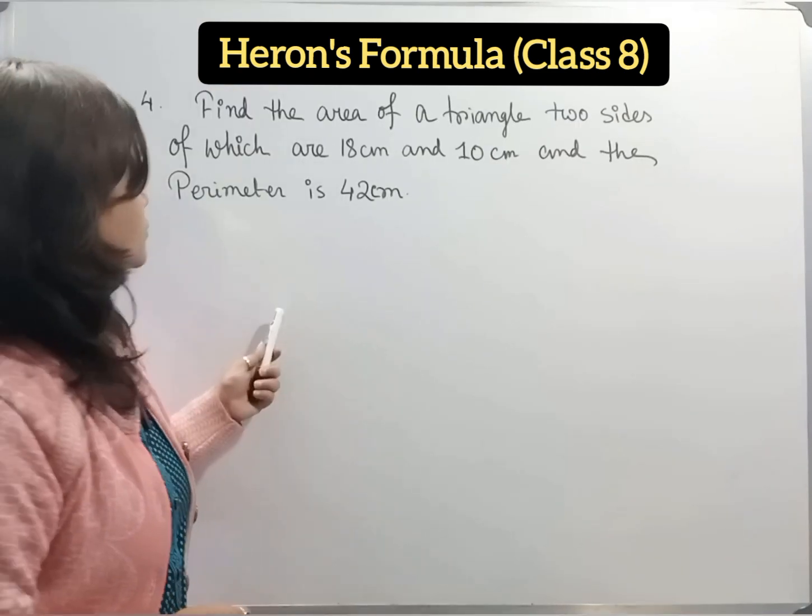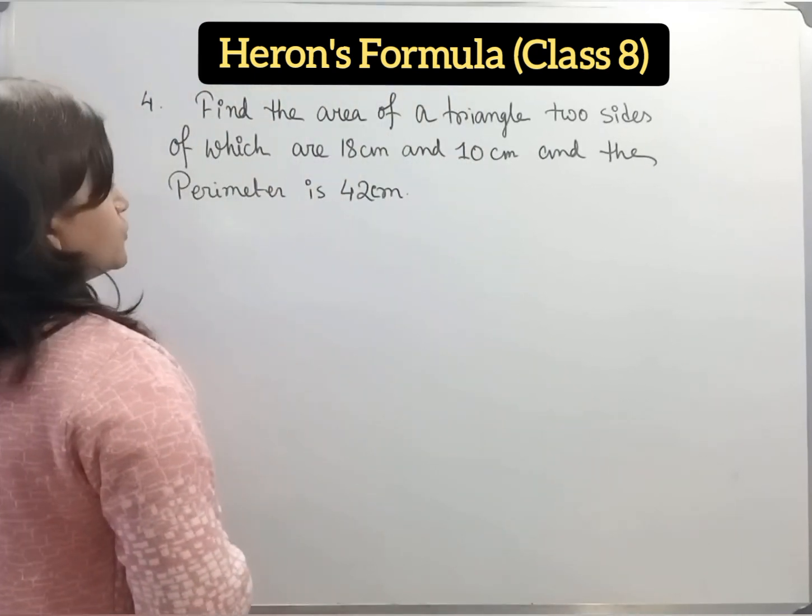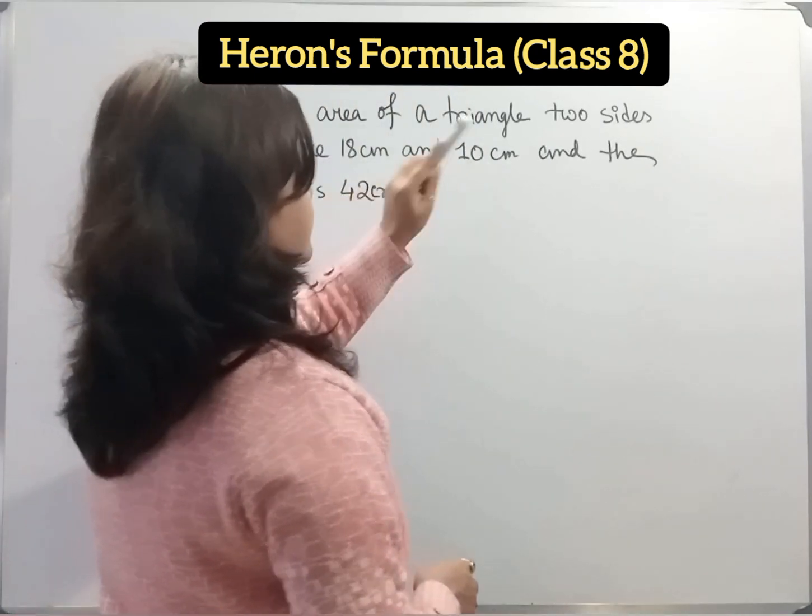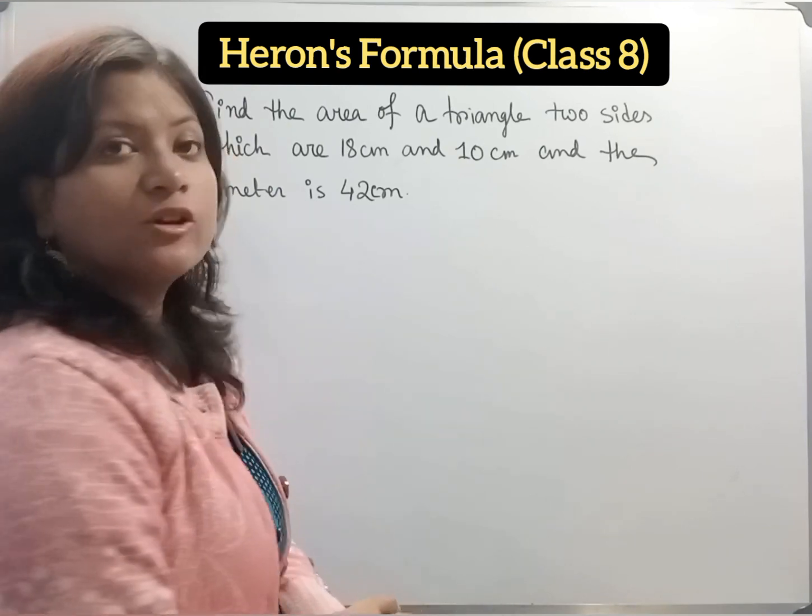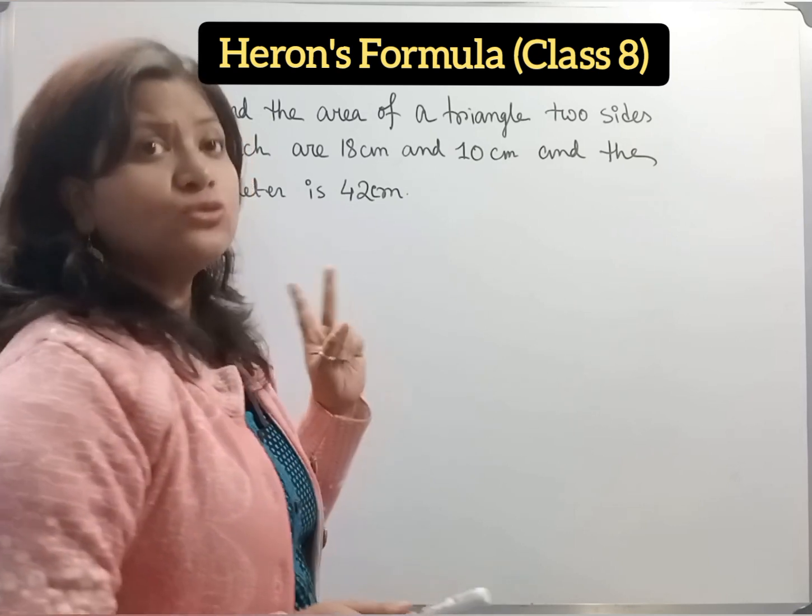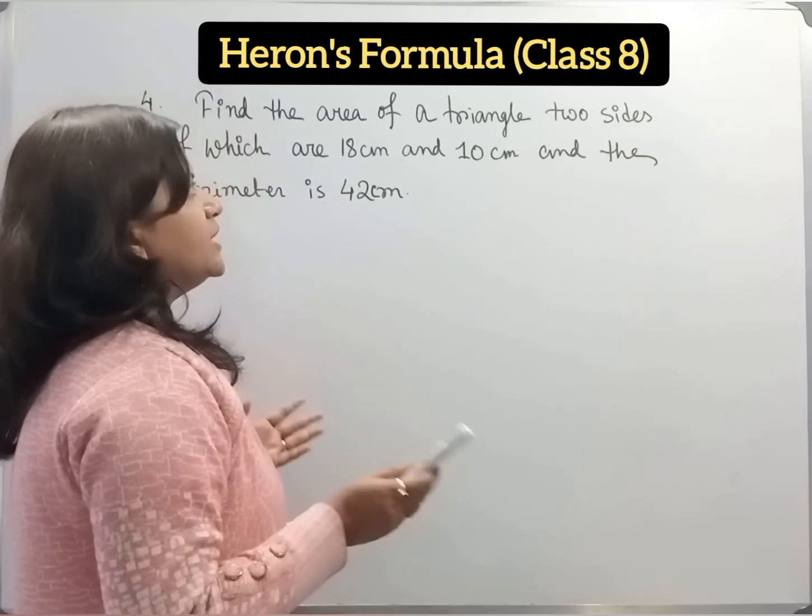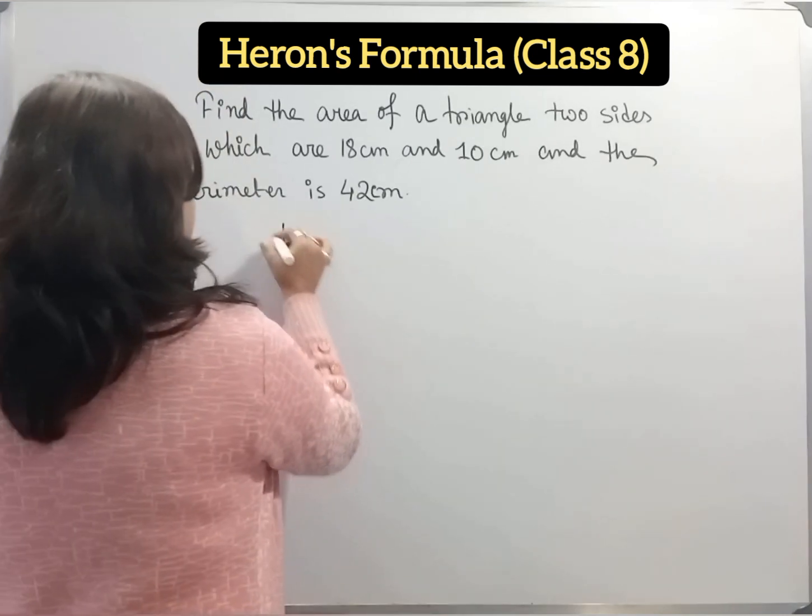Now 4th question. Find the area of a triangle, 2 sides of which are 18 centimeter, 10 centimeter and the perimeter is given. We have to find out the area of the triangle. Now in this question, only length of 2 sides are given. We don't know the length of the third side. Now perimeter is given.